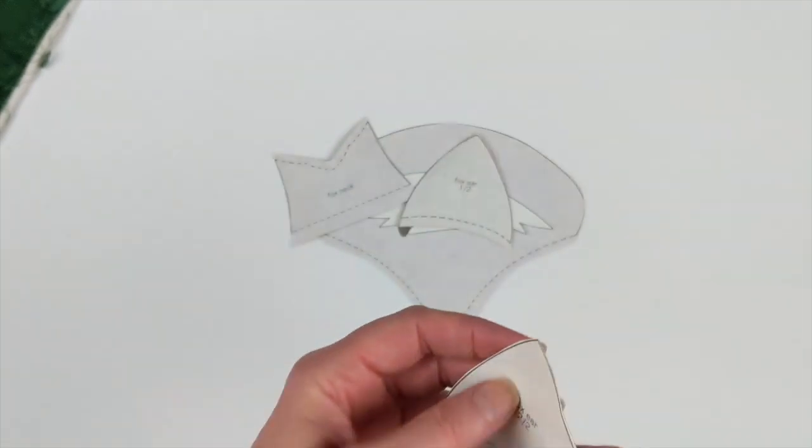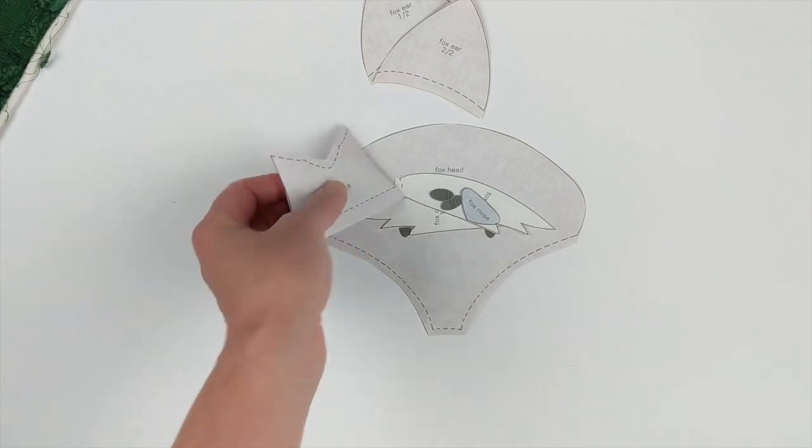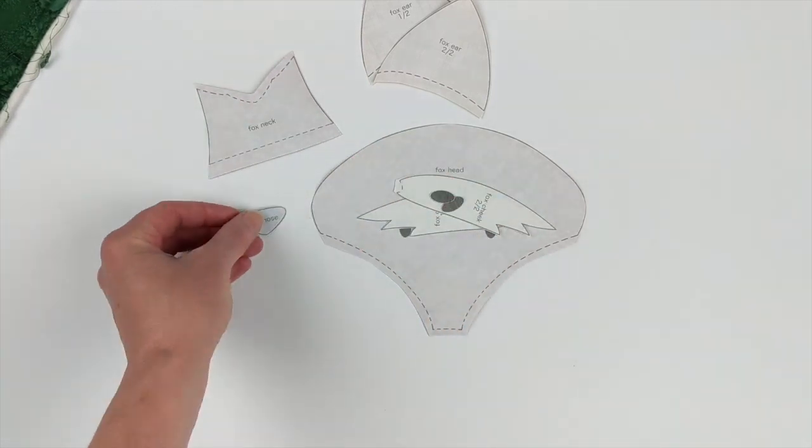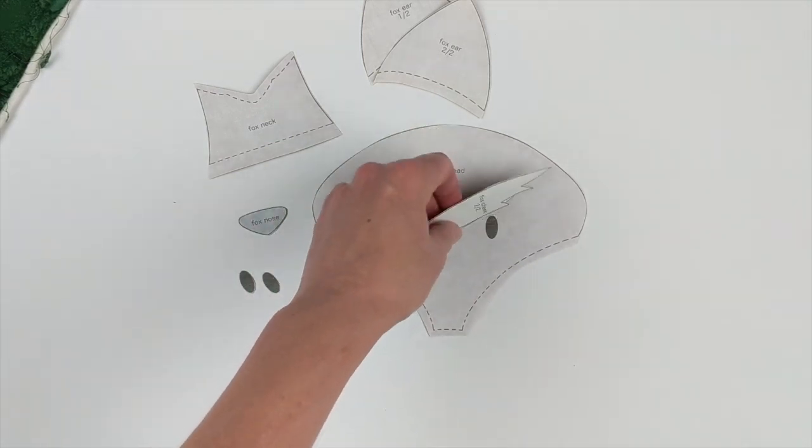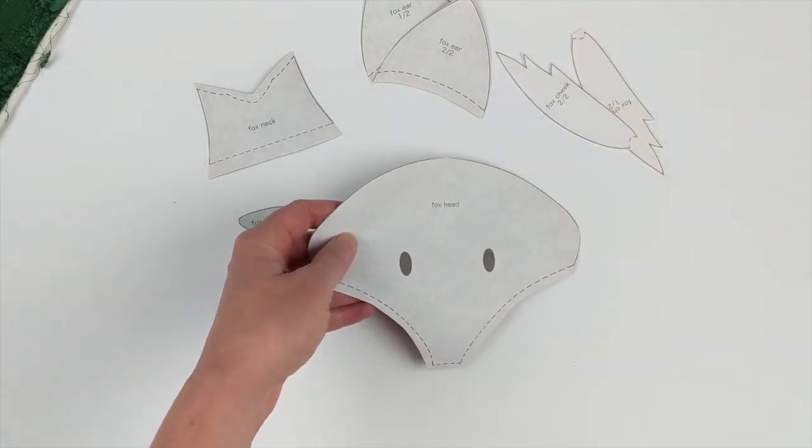So you're going to cut out all of your pieces. And for the fox, we've got two ears, we've got a neck, we've got a nose, two eyes, two cheek pieces, and one head.